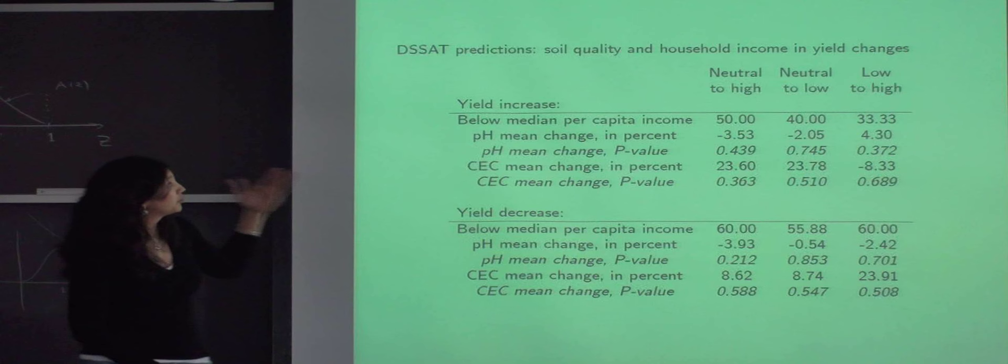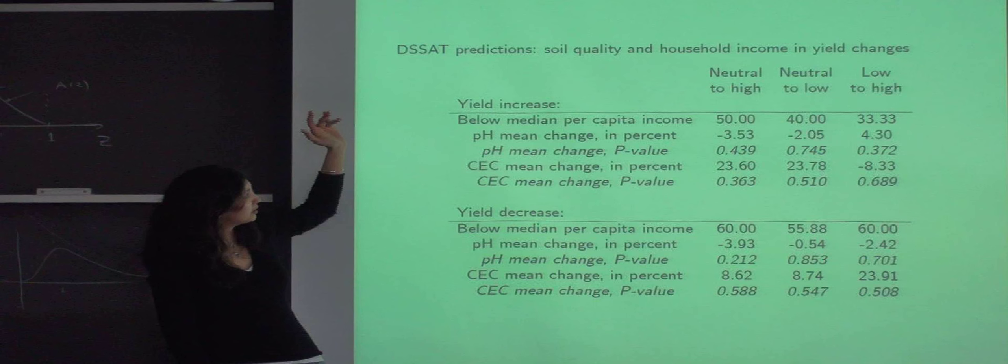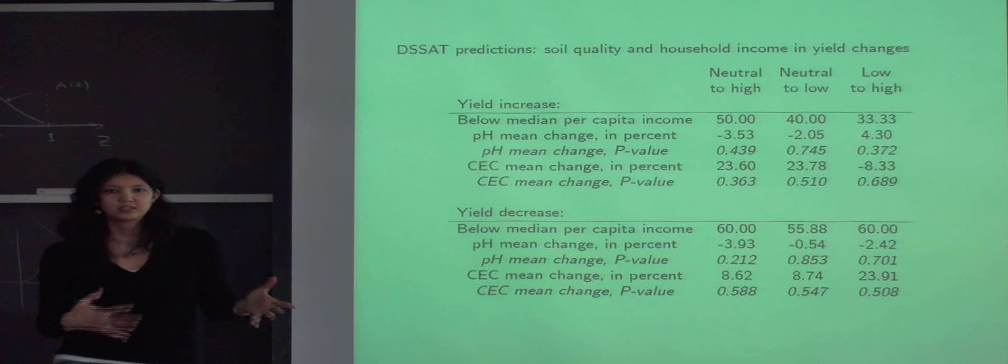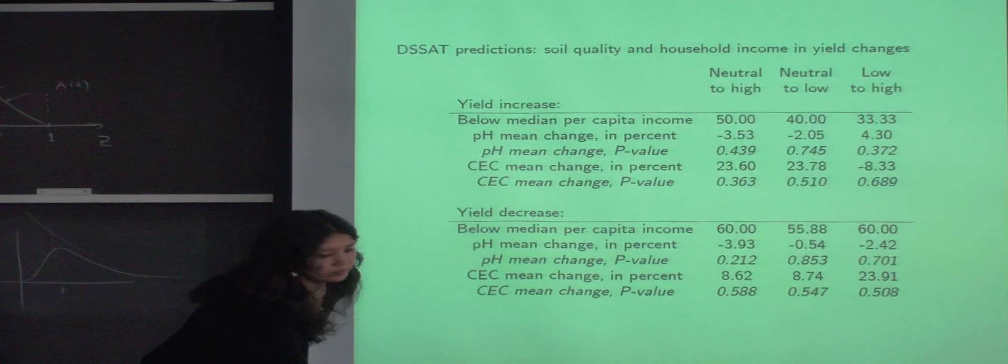So what we see is that for DSSAT, neither the household income level nor the soil quality really affect changes in rice yields under either high or low emission scenarios.